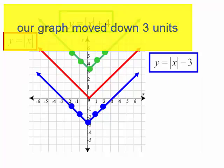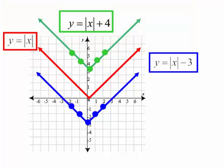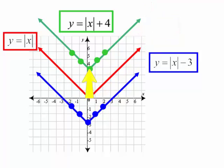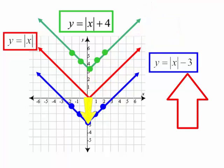So my parent function is y equals the absolute value of x. When I graphed y equals the absolute value of x plus 4, my function moved up 4 spaces. When I graphed y equals the absolute value of x minus 3, my function moved down 3 spaces.